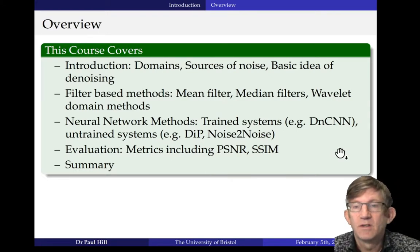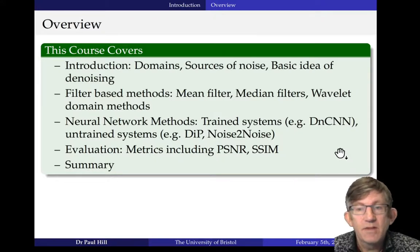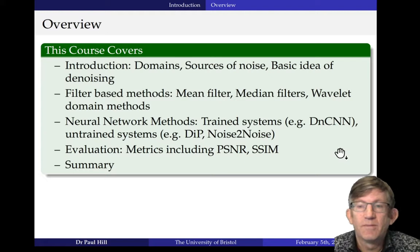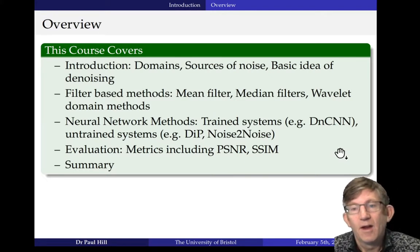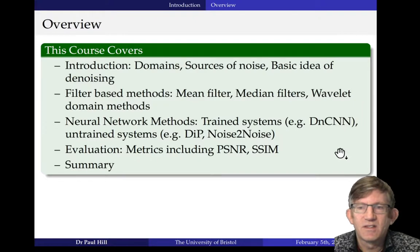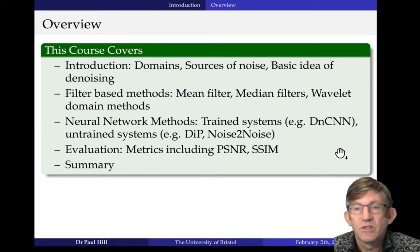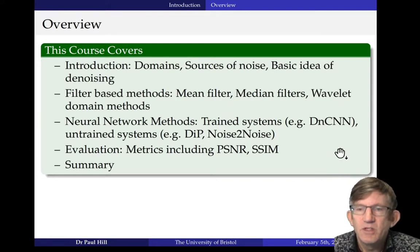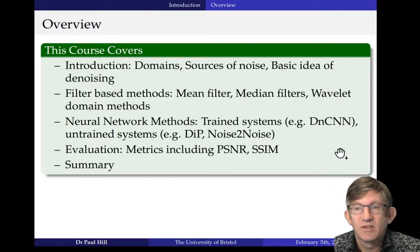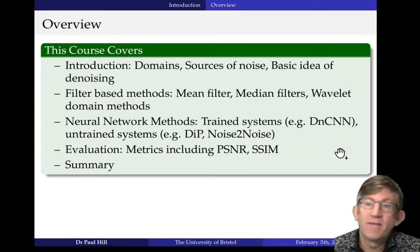Specifically, we're going to be looking at wavelet transform domain denoising methods. Then we're going to look at more state-of-the-art methods, such as neural network methods. We're going to be looking at trained systems such as DNCNN, and untrained systems such as noise-to-noise. Then, as I said before, we're going to look at the evaluation methods using metrics such as PSNR, SSIM, and other perceptual metrics. And finally, we're going to have a look at some code and wrap it all up with a summary.